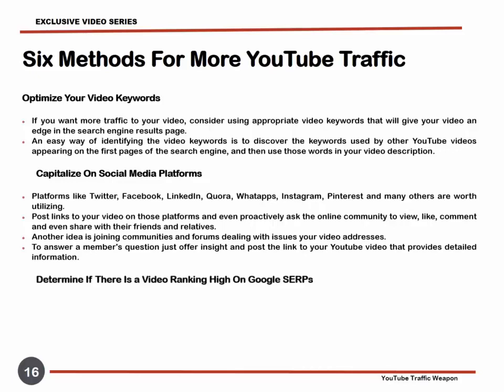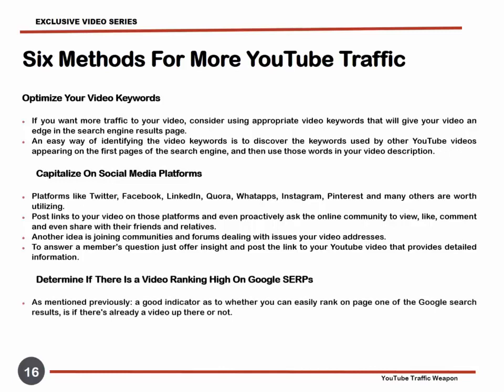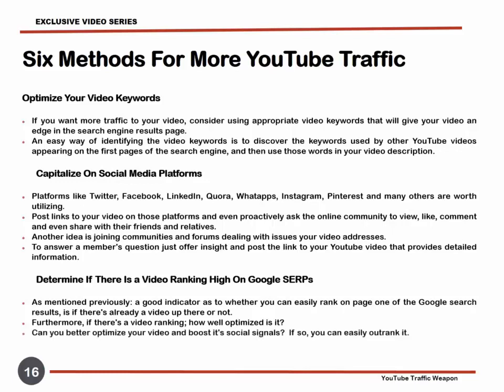Determine if there is a video ranking high on Google SERPs. As mentioned previously, a good indicator as to whether you can easily rank on page one of the Google search results is if there is already a video up there or not. Furthermore, if there is a video ranking, how well optimized is it? Can you better optimize your video and boost its social signals? If so, you can easily outrank it.